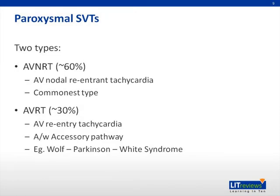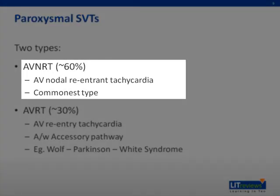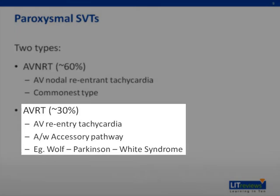There are two types of paroxysmal SVTs: AVNRT and AVRT. AVNRT stands for atrioventricular nodal reentrant tachycardia, making up about 60% of SVTs and is the commonest type. AVRT, or atrioventricular reentry tachycardia, makes up about 30% of SVTs. AVRTs are associated with accessory pathways, an example being Wolff-Parkinson-White syndrome.